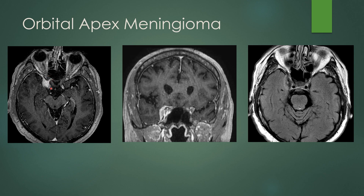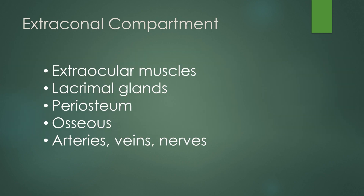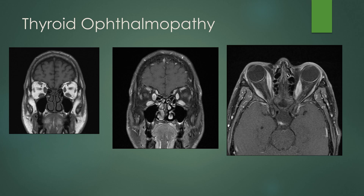In the extraconal compartment, you have the extraocular muscles, the lacrimal glands, the periosteum, the osseous structures, and arteries, veins, and nerves. The classic extraocular muscle finding is thyroid ophthalmopathy, usually associated with Graves' disease. This is usually symmetric enlargement of the extraocular muscles, starting with the inferior rectus muscles — the ones closest to the thyroid gland enlarge first. Then the medial rectus muscles, usually symmetric, with sparing of the musculotendinous junction and homogeneous enhancement of the muscle bellies. This is a classic appearance of thyroid ophthalmopathy.